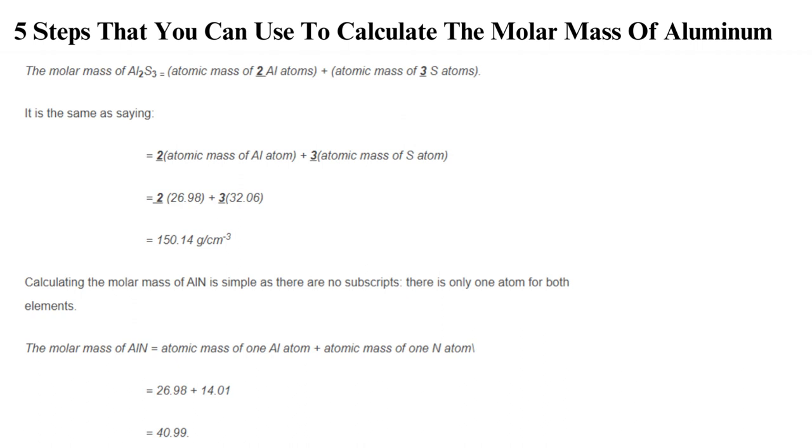4. Note the atomic mass of each element. Once you know the elements in the compound, you then find their atomic mass using the periodic table. In our examples, we want to know the atomic mass of aluminum, nitrogen, and sulfur. The atomic mass of aluminum is 26.98, the atomic mass of nitrogen is 14.01, the atomic mass of sulfur is 32.06.